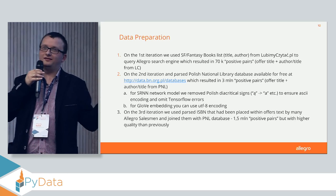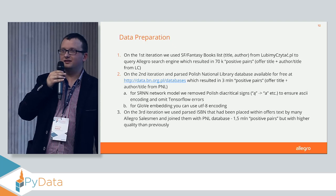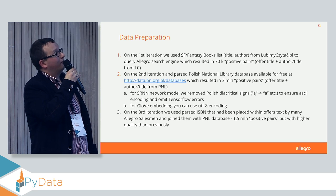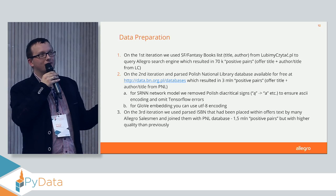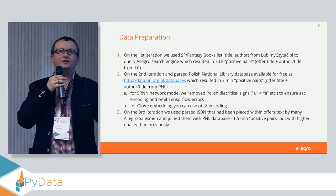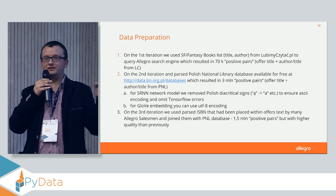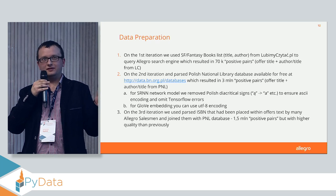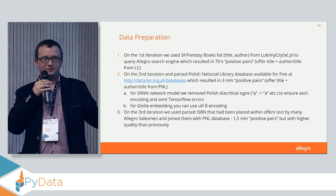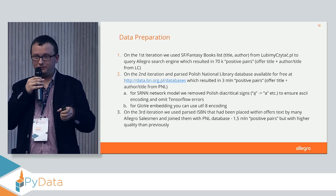We then used a database from the Polish National Library, which covers almost all books published in Polish, with author, ISBN, title, and other details, and again queried Allegro's search engine. This gave us a 3 million example dataset — much bigger. In a third iteration, we found that many sellers at Allegro place ISBN numbers in the offer description rather than the title. Joining the National Library database using this parameter gave us a smaller dataset but with much higher quality.